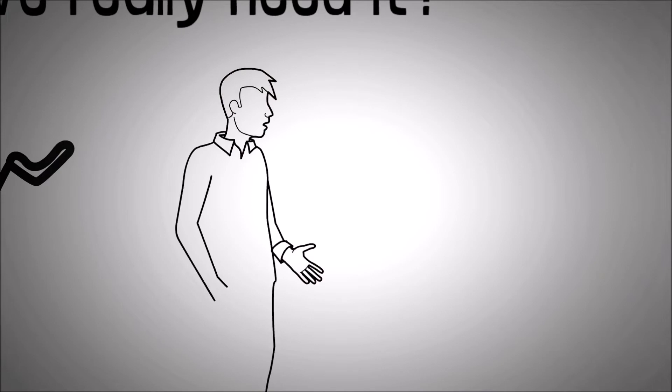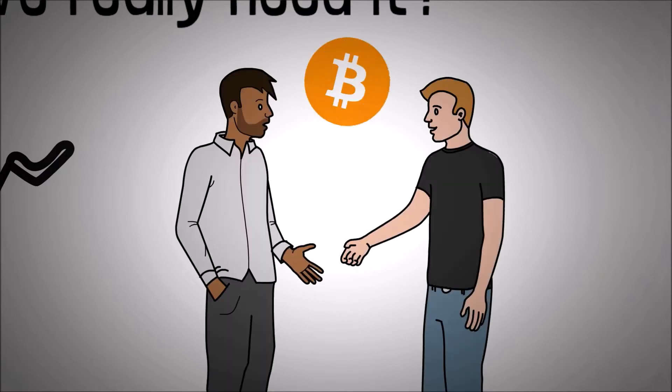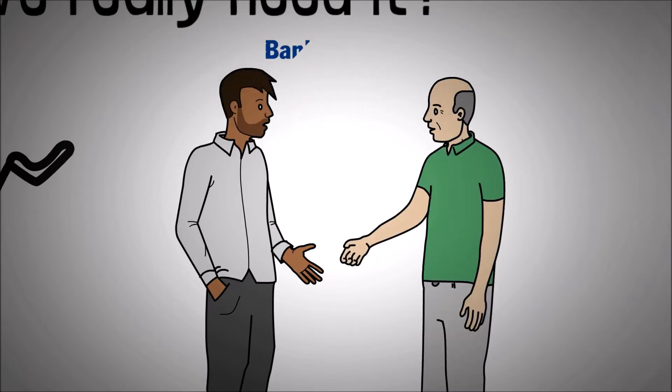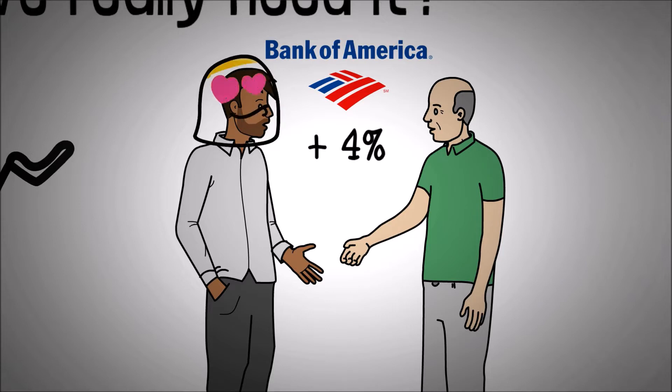Let's consider this. If someone tells me that Bitcoin will give me a 50% return in a year, then I will probably not fall for it. But if someone tells me that Bank of America will give me 4% returns in a year, I will probably believe it.